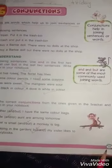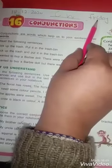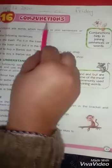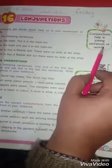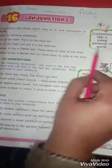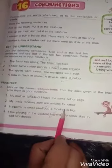Lesson number 16, conjunction. And this is the definition of conjunction: conjunctions help in joining sentences or words. Conjunctions are words which help us to join sentences or words. Look at this practice exercise, complete this.